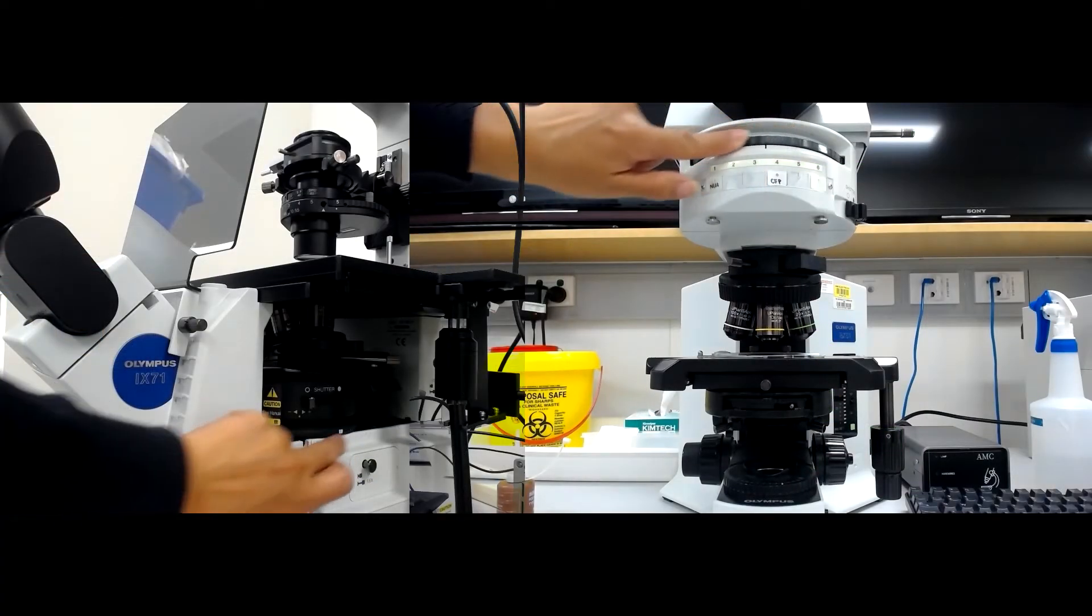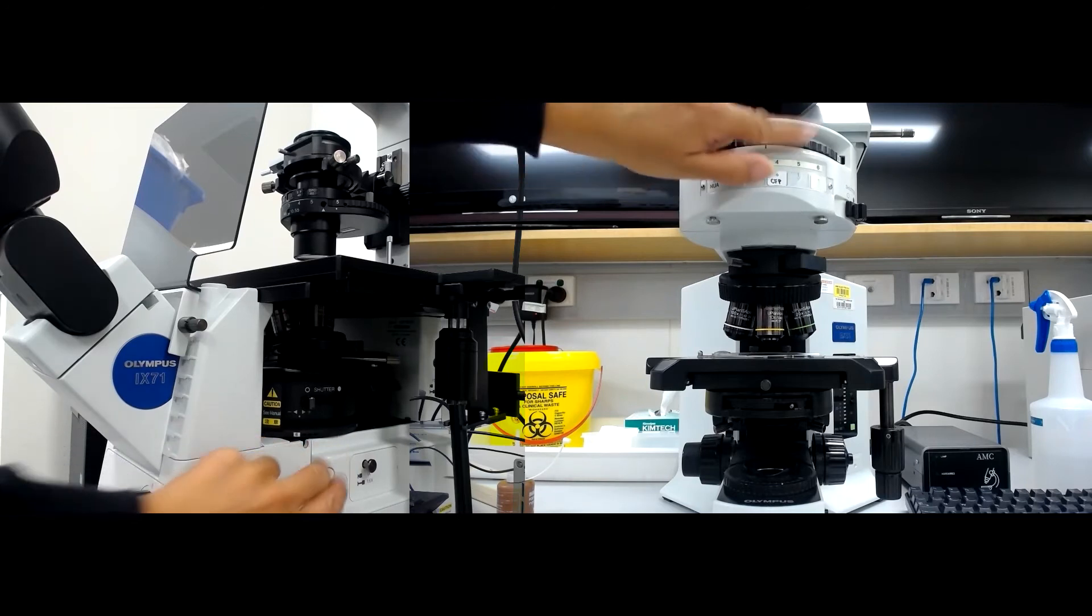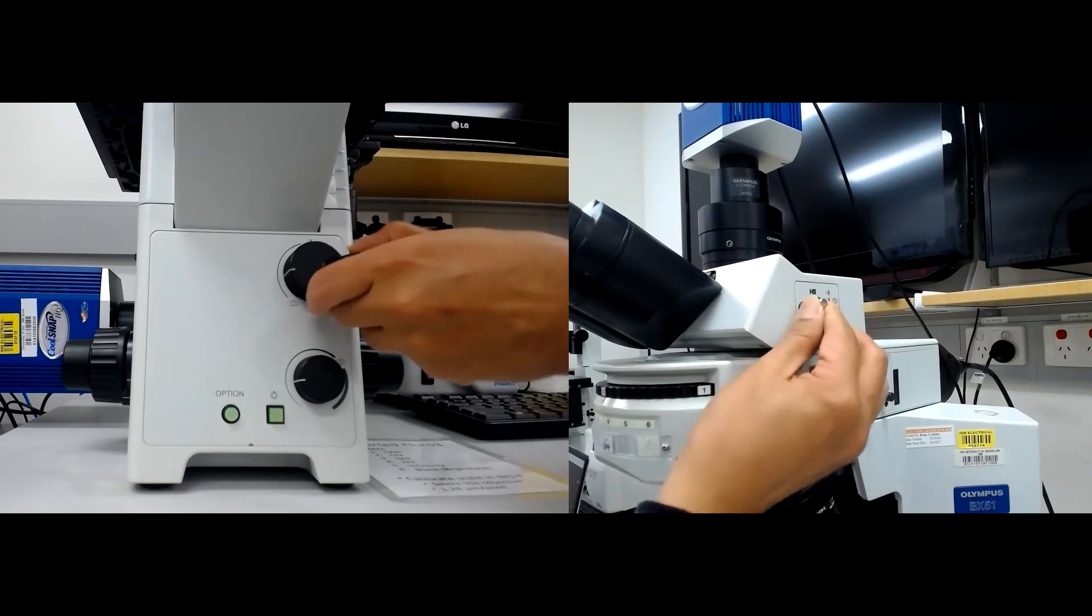Turn the emission turret so that the correct filter is in place for your fluorescent signal of interest. Make sure the light is directed to the eyepieces.